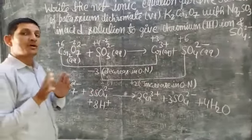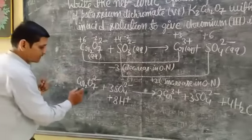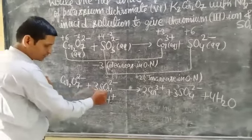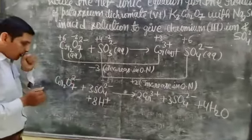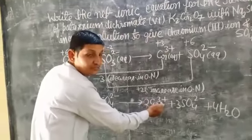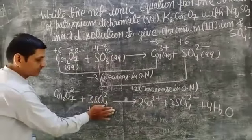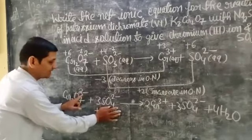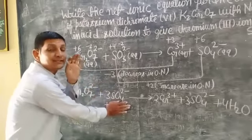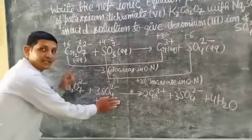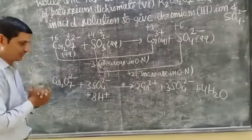Looking at the balanced skeleton: Cr₂O₇²⁻ gives 2Cr³⁺, and 3SO₃²⁻ gives 3SO₄²⁻. Checking charges: on the left side the charge is −6, on the right side the charge is −8, so charges are not balanced. Step 4 — to balance charge, add hydrogen ions in acidic medium. The left side has a charge of −8, so we add 8H⁺ ions. Now 8 plus and 8 minus balance, giving a net charge of 0.